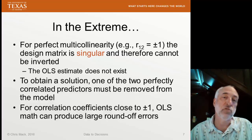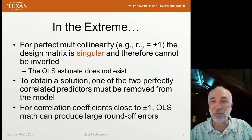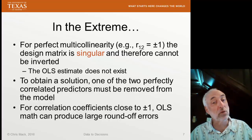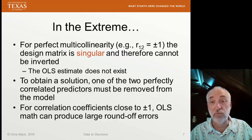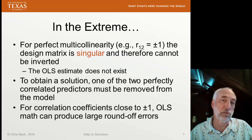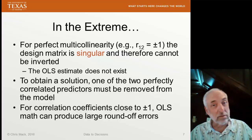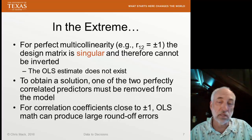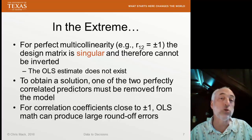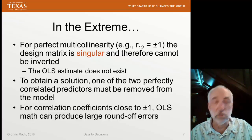A perfect correlation is rare, other than mathematical mistakes where you might include two variables that are in fact the same. We can have models where correlation coefficients are close to plus or minus one — in that case, we can get numerical instabilities, not divide by zero but divide by a number close to zero, leading to large roundoff errors and difficulties. But even without mathematical difficulties from extreme multicollinearity, we're going to get some interpretive difficulties.